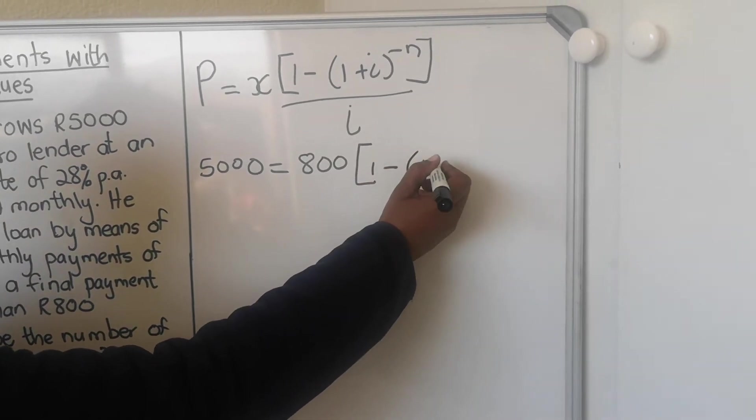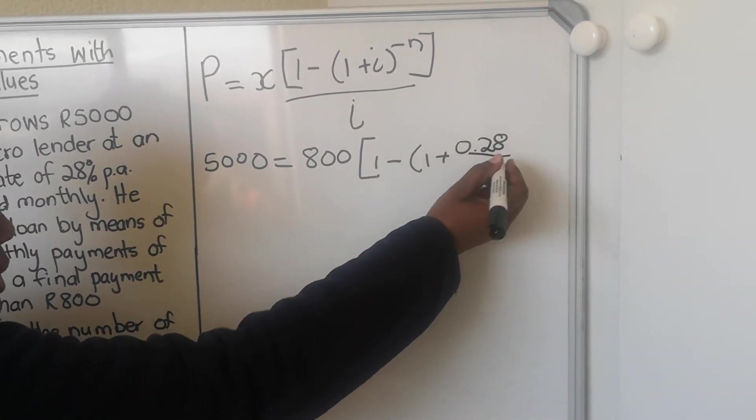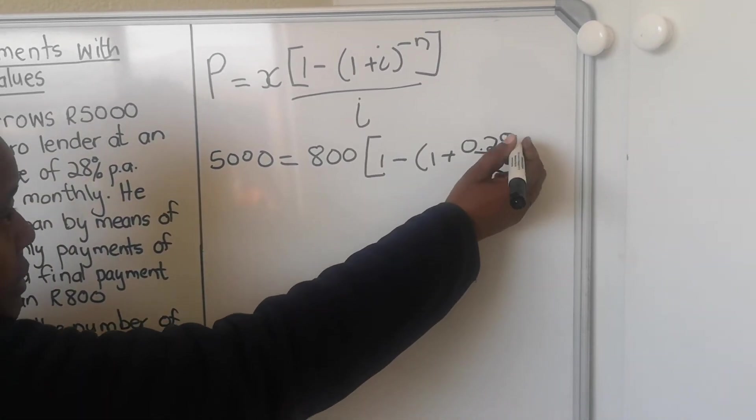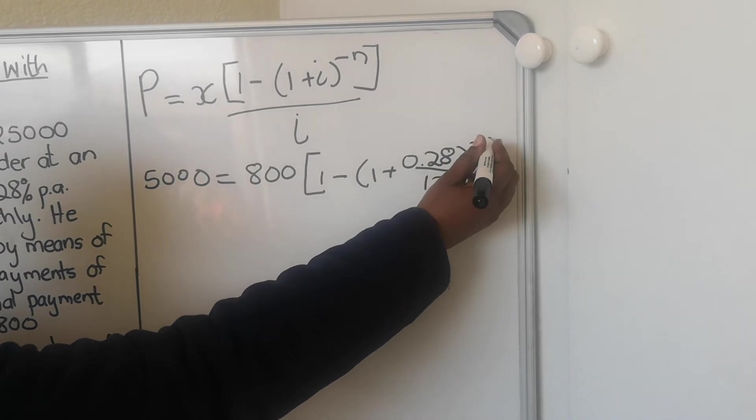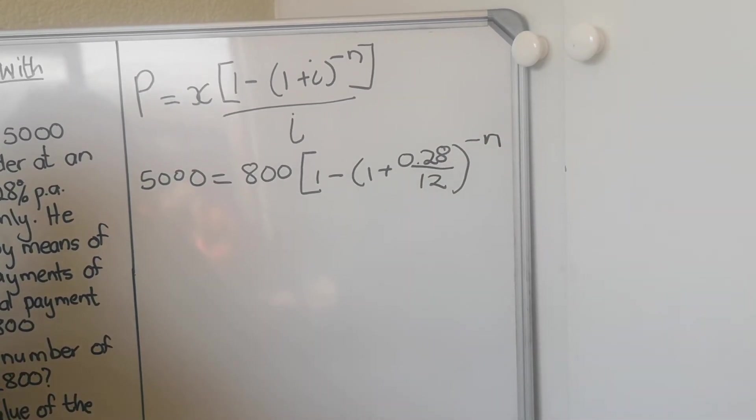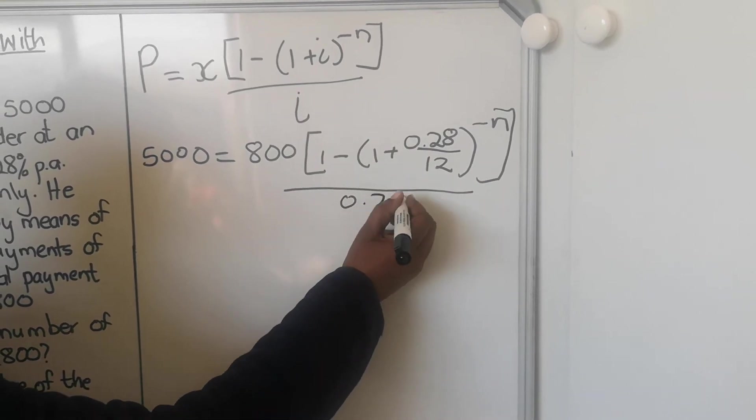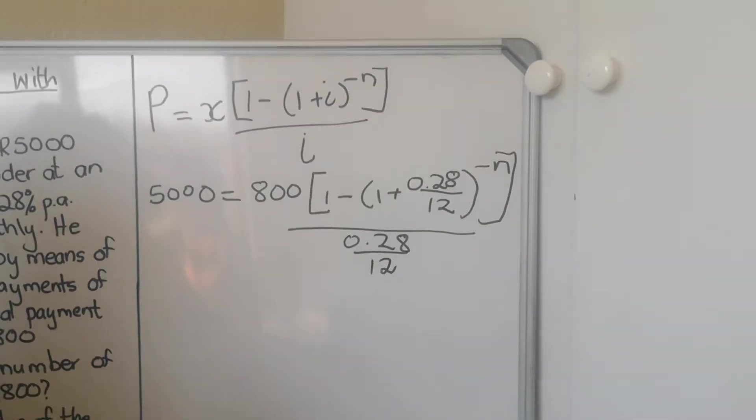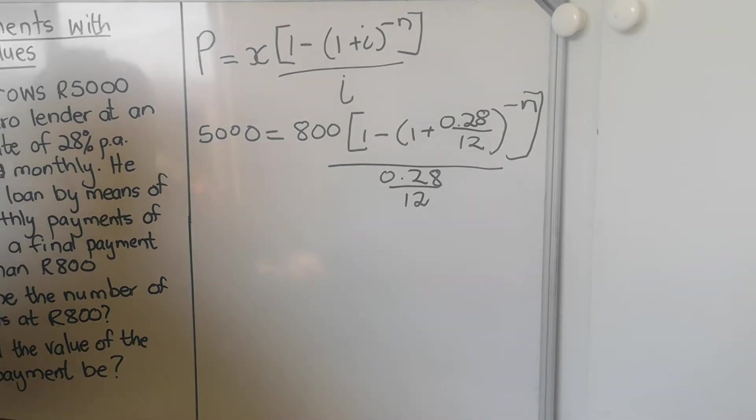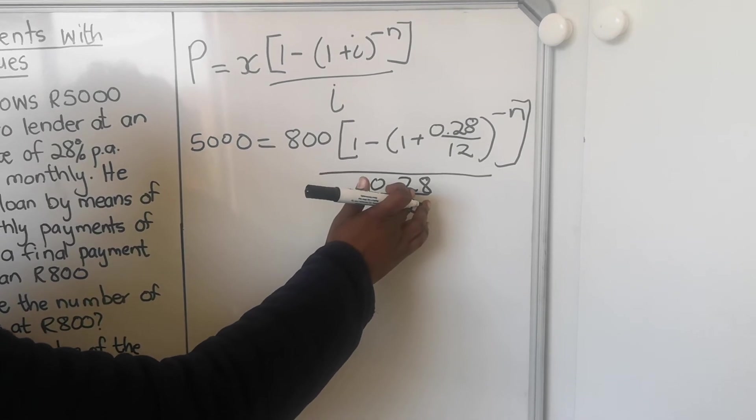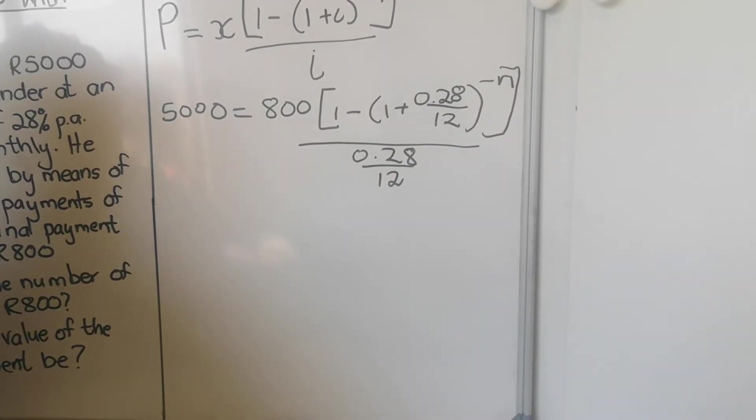One minus, one plus interest 28%, so 28 divided by 100 is 0.28, divided by compounded monthly by 12. Now we're going to get rid of this denominator. I'm going to multiply both sides by 0.28 divided by 12. I'm going to multiply here, then it will cancel out. So I'm going to have 5000 multiplied by the fraction 0.28 divided by 12.